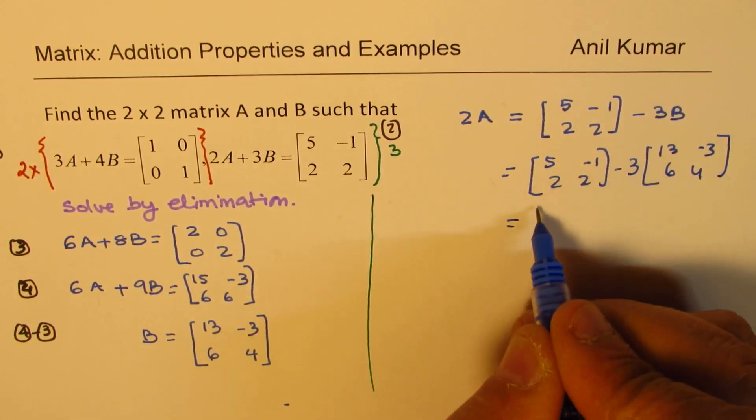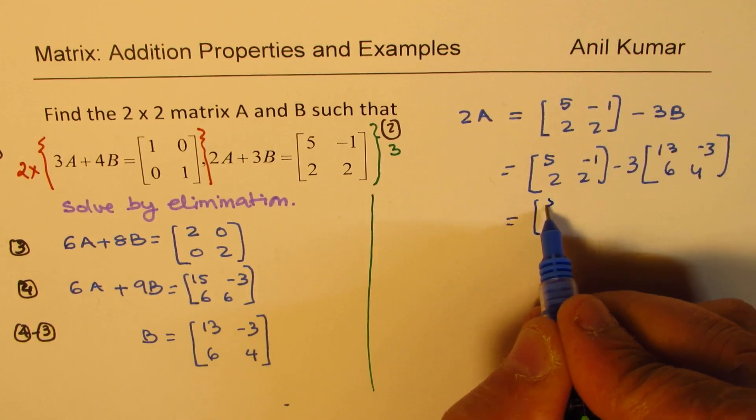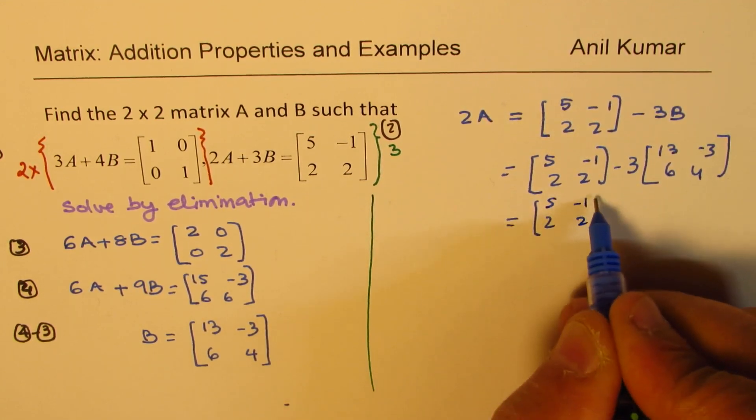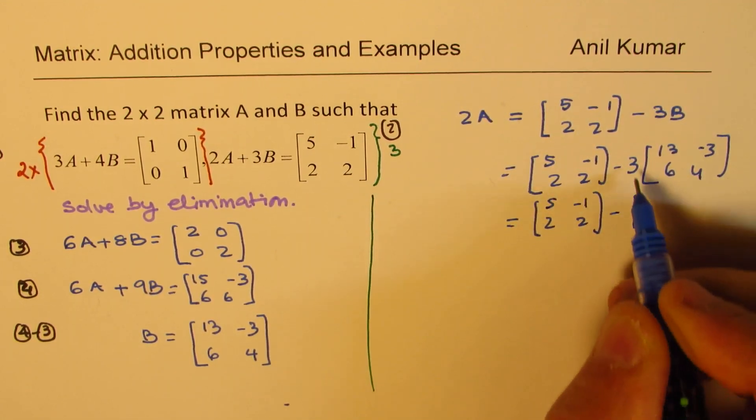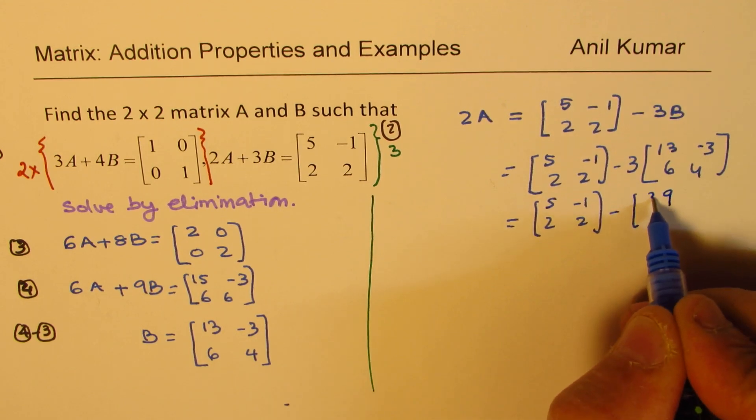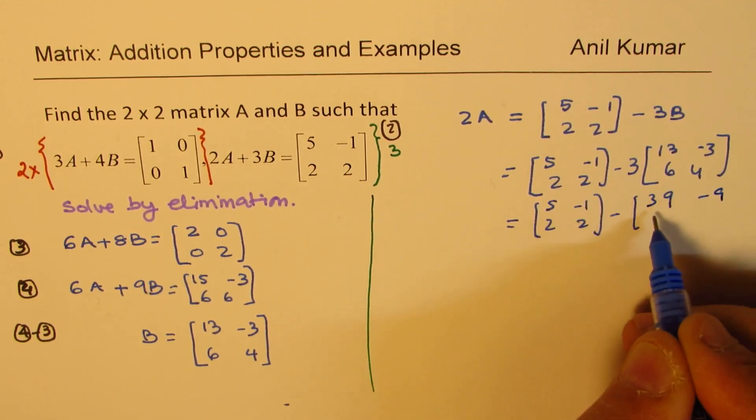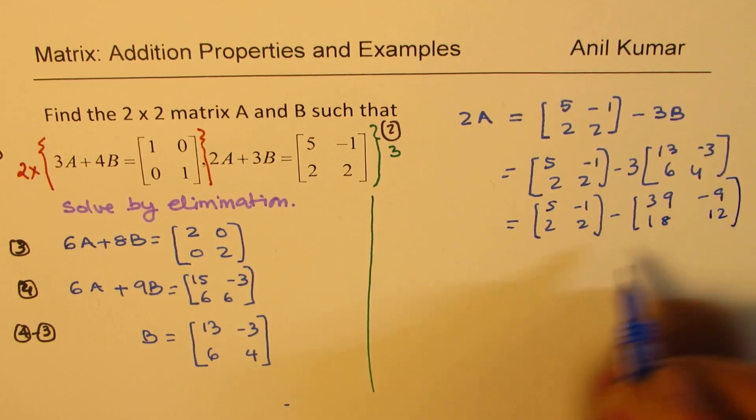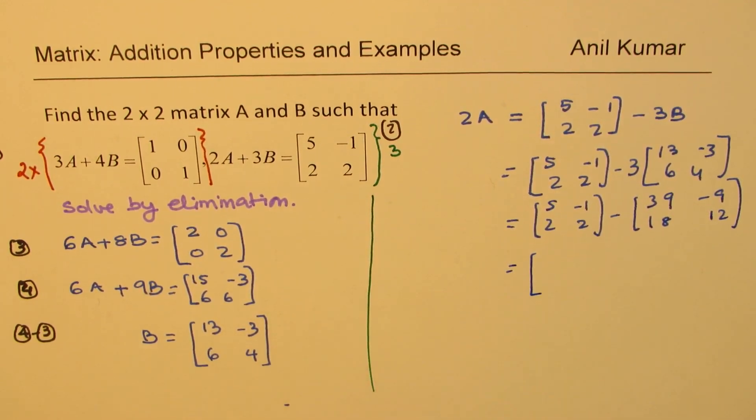So now first let's do scalar multiplication, which gives us 3 times 13 is 39, minus 9, 18 and 12.